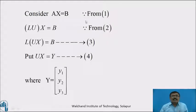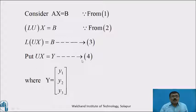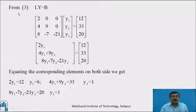Consider AX = B from equation 1. Since A = LU, we get LU·X = B, which can be written as L·(UX) = B, call it equation 3. Put UX = Y, call it equation 4, where Y = [Y1, Y2, Y3]. From equation 3, LY = B: the lower triangular matrix L = [[2, 0, 0], [4, 9, 0], [8, −7, −21]] times [Y1, Y2, Y3] equals [12, 33, 20].